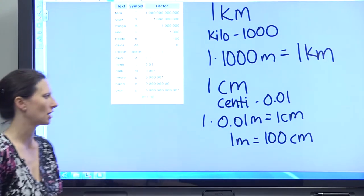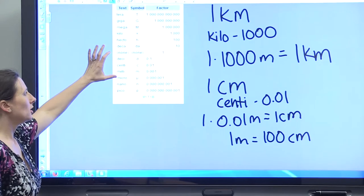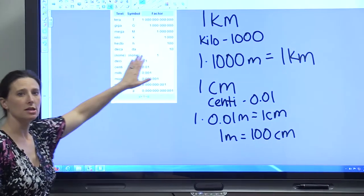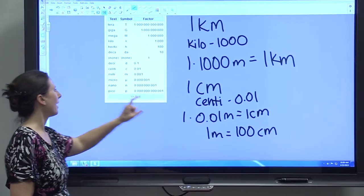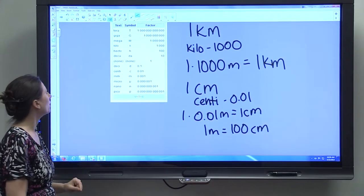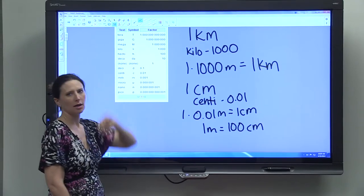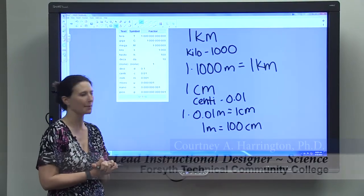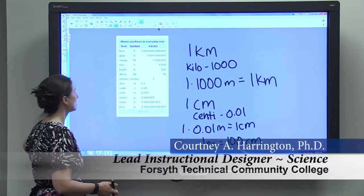So if you use these prefixes and look at the prefixes and know the factors, you'll be able to determine how many microliters are in a liter or how many grams are in a gigagram. So these prefixes are very useful for you to know.